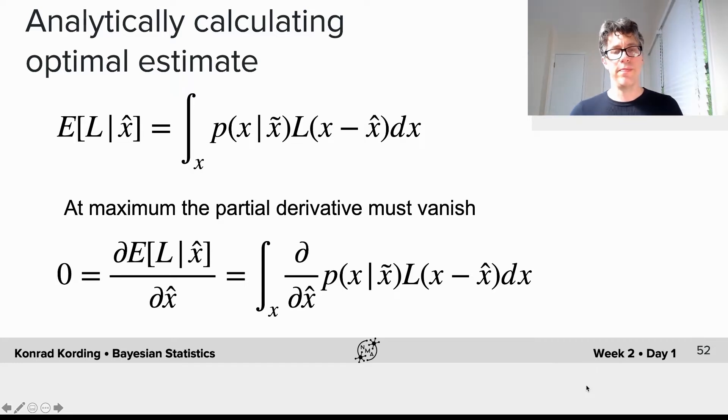At the maximum, at the best estimate that we will have, the partial derivative must vanish. So we must have 0 equals the derivative of the expected loss with respect to our estimate. Now, this is all linear operators, so we can change their order.